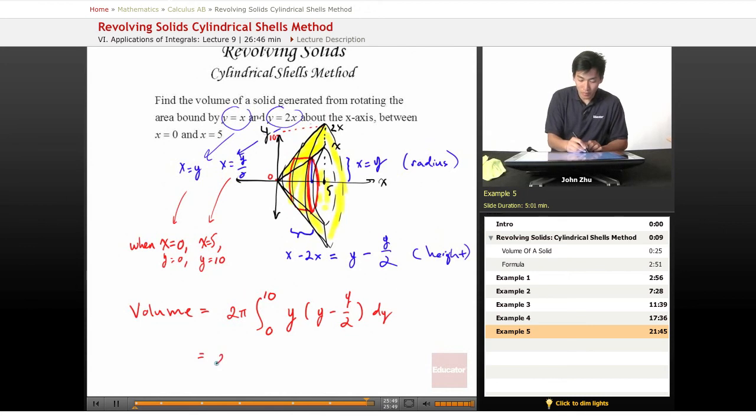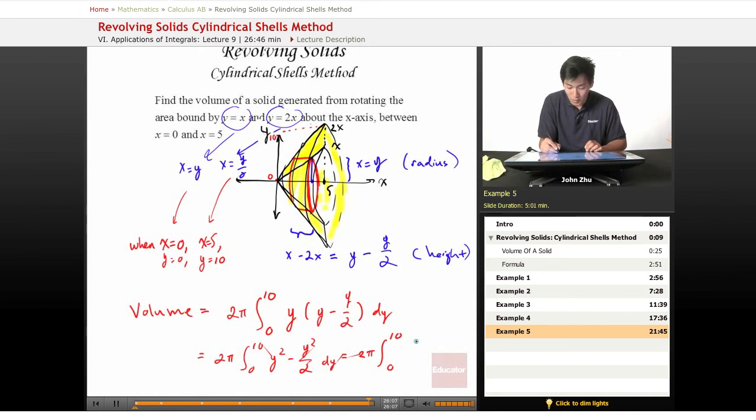So we can rewrite that a little bit: 0 to 10, y squared minus y squared over 2 dy. In other words, 2 pi times integral from 0 to 10, y squared minus 1 half y squared, so that means it's just 1 half y squared dy.